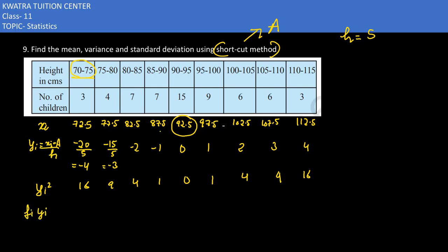Then I have the f_i * y_i values: 3 into minus 4 is minus 12, 4 into minus 3 is minus 12, 7 into minus 2 is minus 14, 7 into minus 1 is minus 7, 15 into 0 is 0, 9 into 1 is 9, 6 into 2 is 12, 6 into 3 is 18, 3 into 4 is 12.